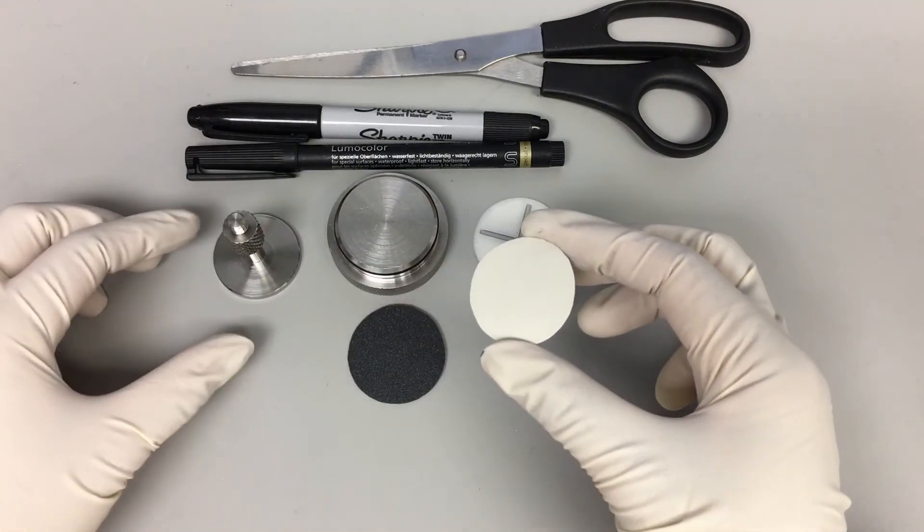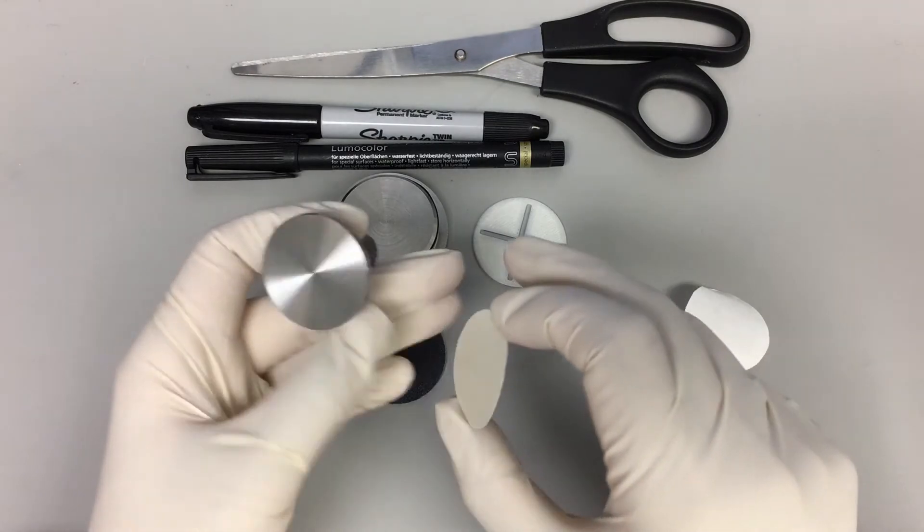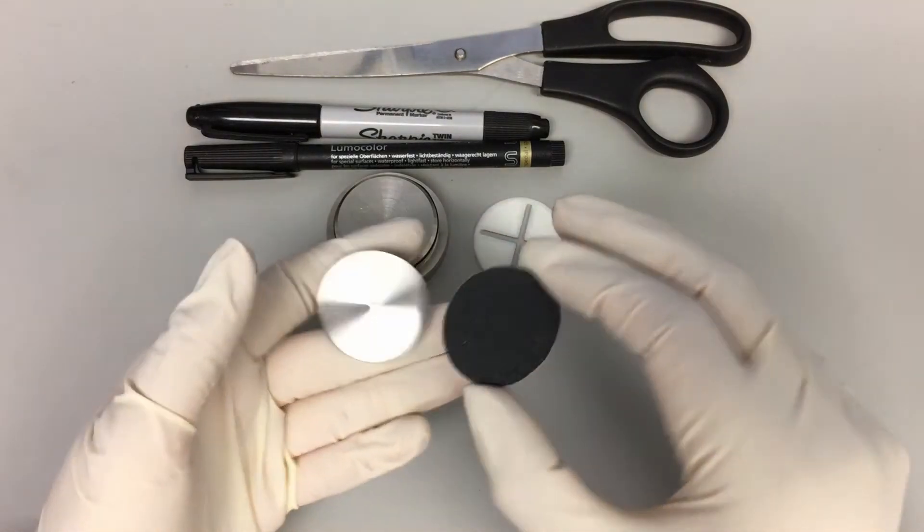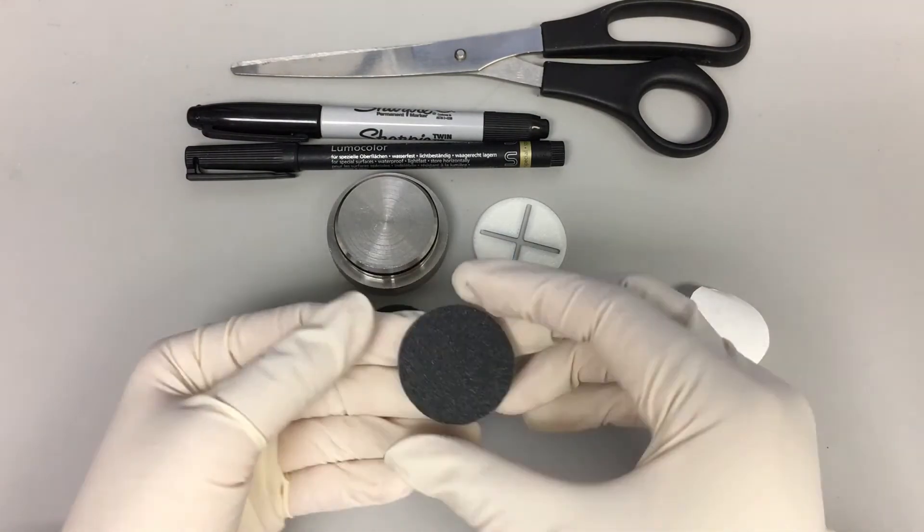Carefully stick each piece of adhesive sandpaper such that it neatly fits the entire surface of the platen and the sample holder. Apply pressure for a moment to ensure proper adhesion.